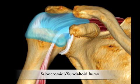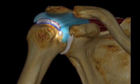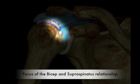Enveloping the bulk of the rotator cuff is the subacromial/subdeltoid bursa. This illustration represents a transverse slice through the anatomy of the supraspinatus and infraspinatus. The main emphasis of this video will be to describe the relationship of the supraspinatus and bicep tendon at the level of the rotator interval.